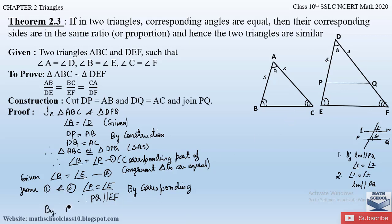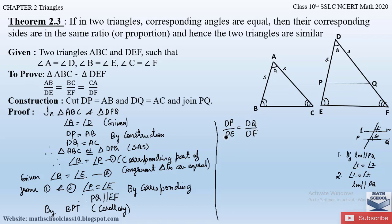By the Basic Proportionality Theorem corollary: DP/DE = DQ/DF. Substituting from the construction — DP = AB and DQ = AC — we obtain AB/DE = AC/DF. This proves part of what we needed to show.